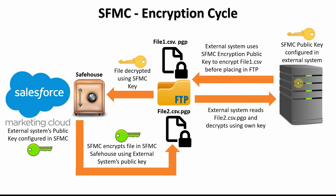We have external systems that are actually sending encrypted files into our enhanced FTP, then it's coming into the safe house which is getting decrypted. On the outbound, we have files coming into our safe house, we encrypt them, place them on the FTP, and send them out to the external systems. So there's encryption and decryption happening both inbound and outbound.